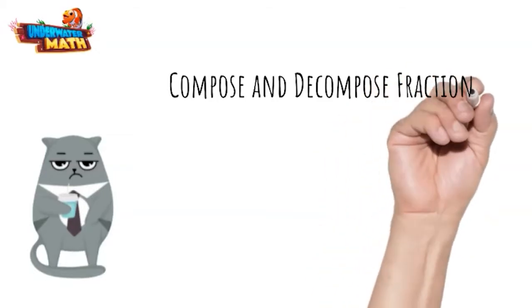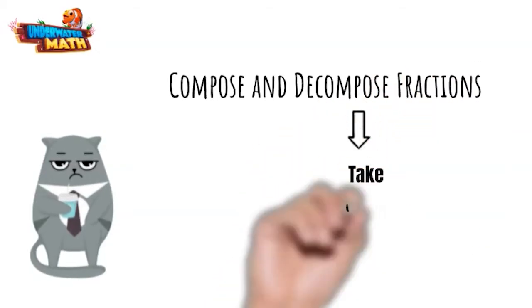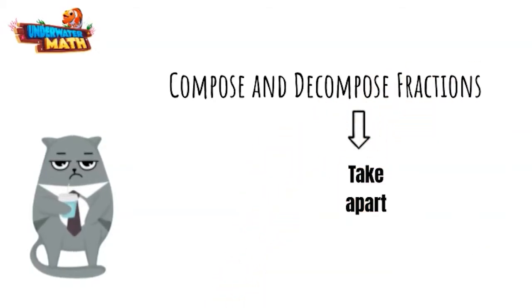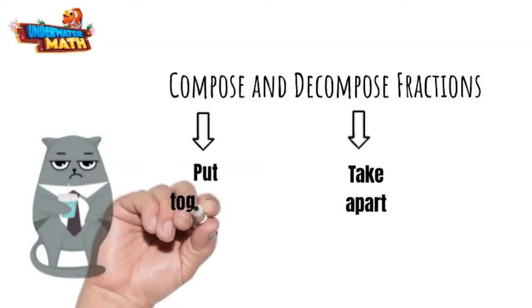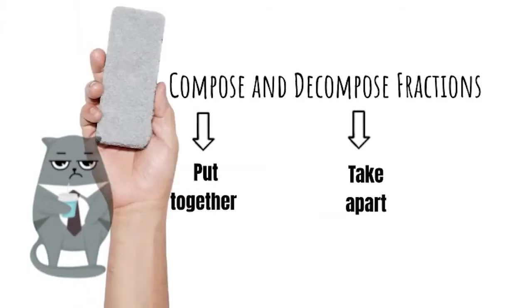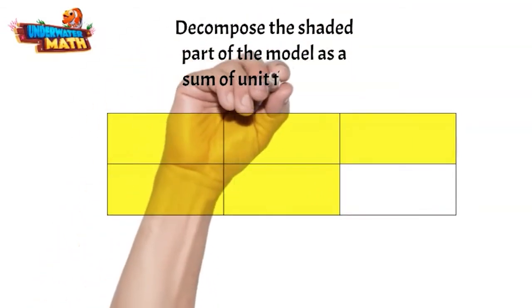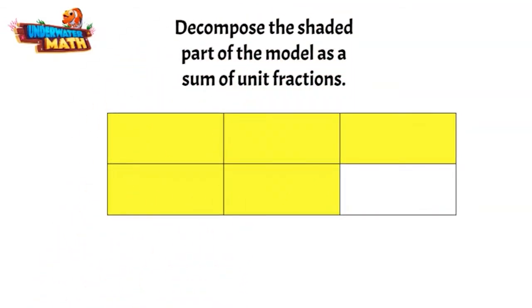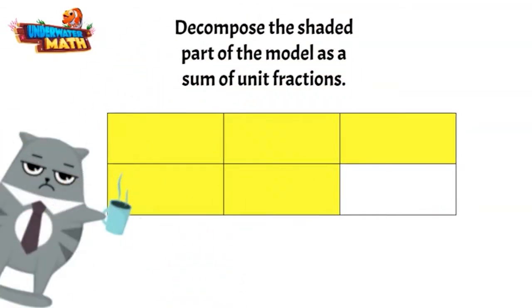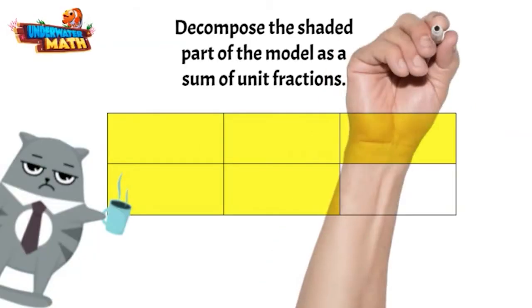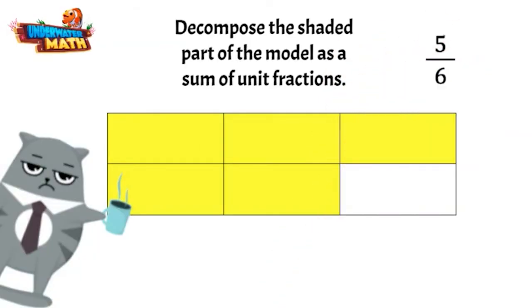We just decomposed the fraction five-fifths into a sum of unit fractions. You mean we took the fraction apart? Yep — decompose means to take it apart, and compose means put it together. Let's decompose another fraction. Decompose the shaded part of the model as a sum of unit fractions. This model represents five-sixths — yes it does! Now let's take it apart.